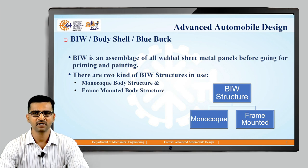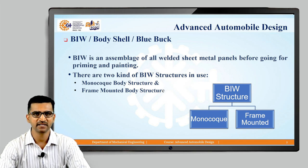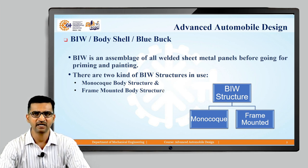We will discuss what monocoque and frame mounted structures are. Basically, monocoque is the structure where there is no separate frame as such. The body itself acts as a frame, and the entire structure — passenger cabin, everything — acts as a frame in that particular monocoque structure. All other elements like IC engines, mechanical transmission system, suspension, and seats are connected to that frame.